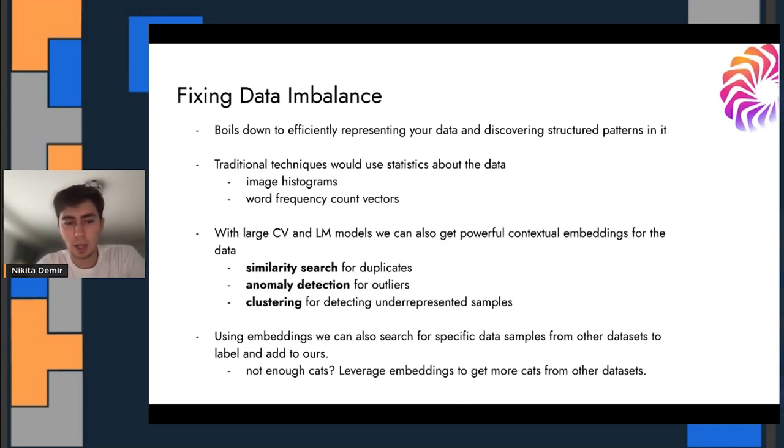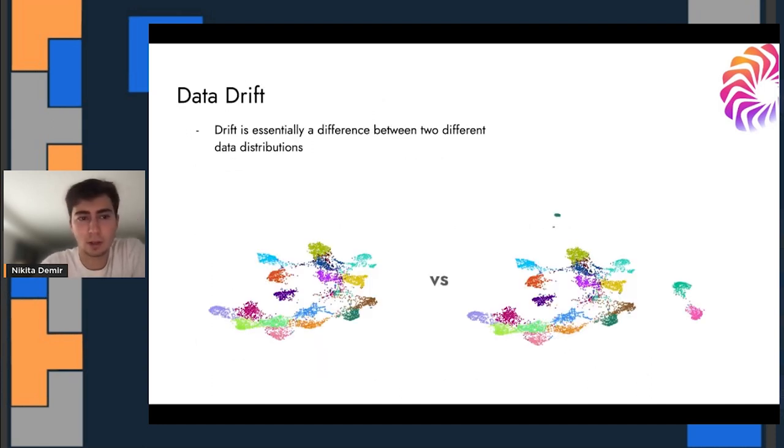An interesting way to get more data in a region, using those same embeddings, you could then find similar data from other splits or other data sets you might have access to. Perhaps you have a stream of production data and you're not sure what to label from it. Well, one way that you could decide is to use the embeddings to find similar samples to the most maybe difficult for the model in training or the most anomalous examples and essentially collate more examples of this sample from other data sets.